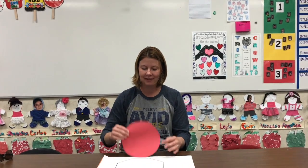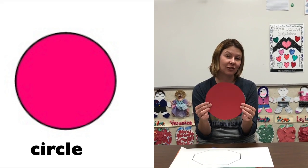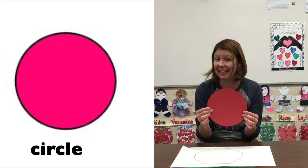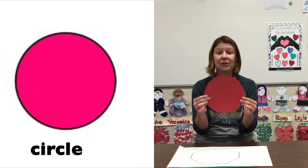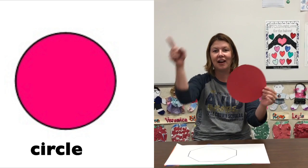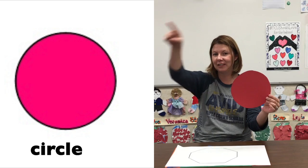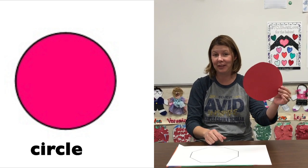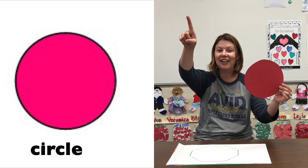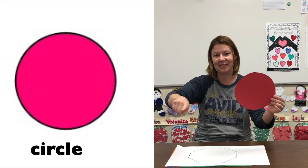Boys and girls, we are going to practice our flat shapes. Flat shapes are like this. Our circles. You cannot put anything in circles. Circles have zero sides. Circles go around and around. Can you make a circle with your hand? Show me your finger. Around and around.